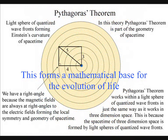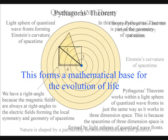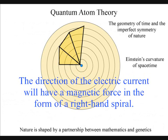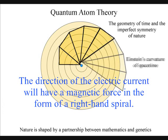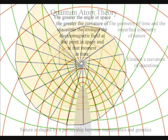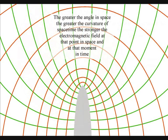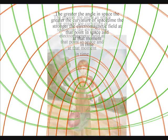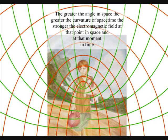The magnetic fields are always at right angles to the electric fields, forming the local spacetime symmetry and geometry that will spiral out, creating the visual and mathematical patterns of our universe. The greater the angle in space, the greater the curvature of spacetime, the stronger the electromagnetic field, at that point in space, and at that moment in time.